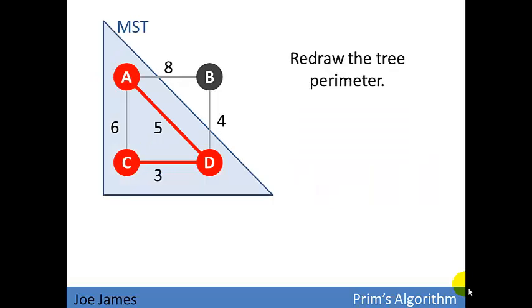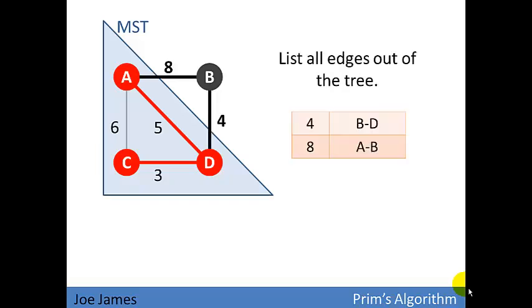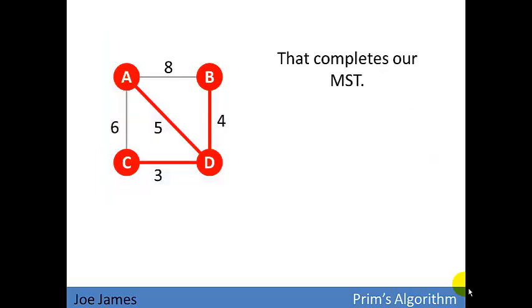We'll redraw the tree perimeter. We can see at this point that we're not going to use edge six, because we've already reached edges A and C. And we have two edges left. So we'll list all the out edges from the tree, edges four and eight. Edge four is certainly the cheapest, so there is our minimum spanning tree. So there are now two edges in the tree that we don't use. We take those away, the unused edges, and our minimum spanning tree looks like this.